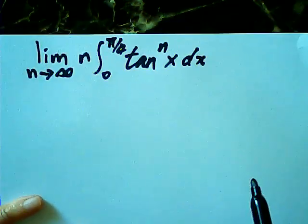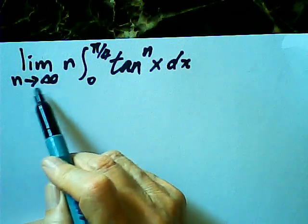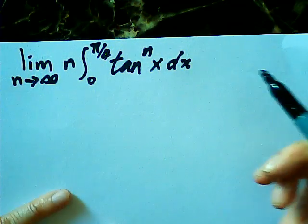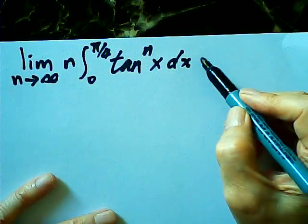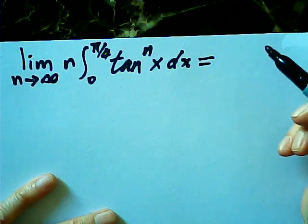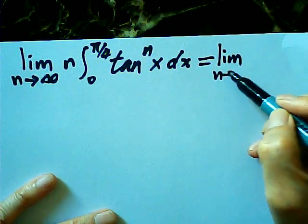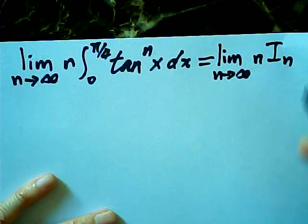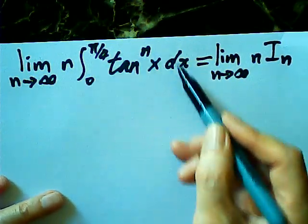Here we have a limit question: the limit as n approaches infinity of n times this integral. Obviously this is not an easy question. Let me first write this as the limit as n approaches infinity of n times I sub n, where I sub n is this integral.